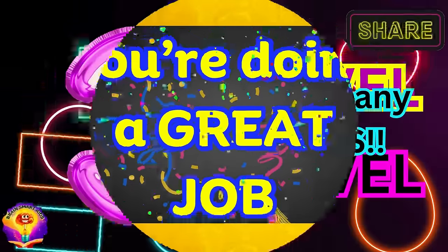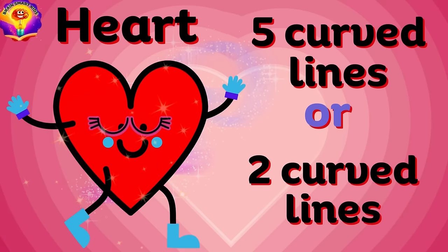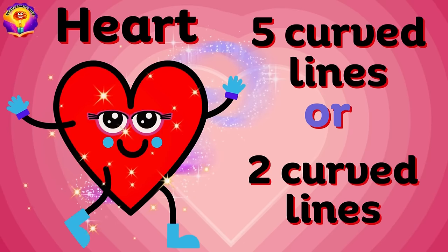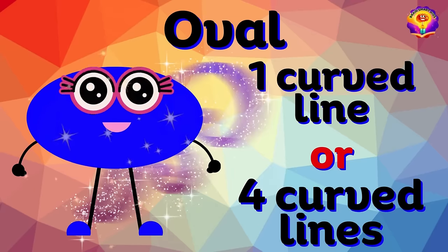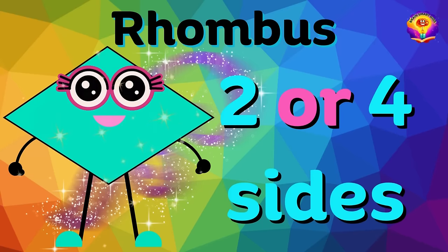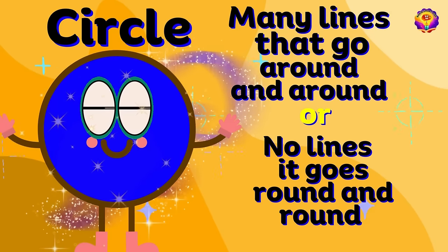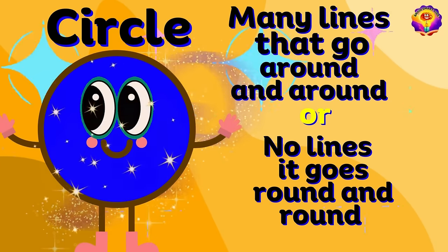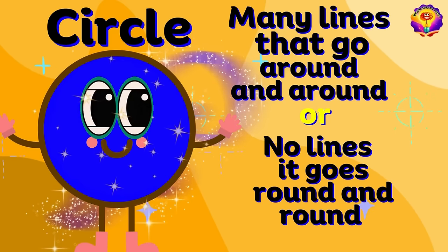You're doing a great job. Third level. How many sides? Heart — five curved lines or two curved lines? Hooray! Oval — one curved line or four curved lines? Rhombus — two or four sides? Hooray! Circle — many lines that go around and around, or no lines? It goes around and around. Hooray!